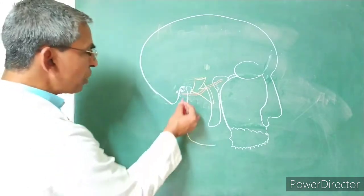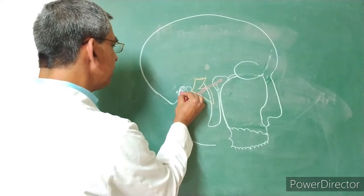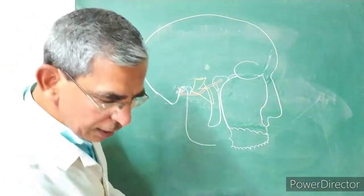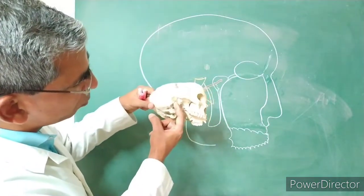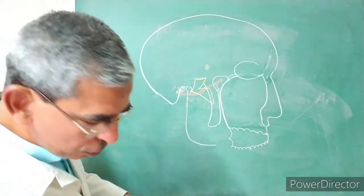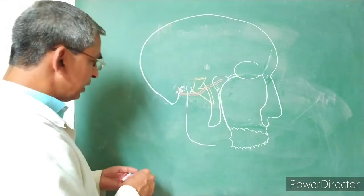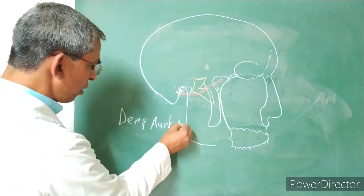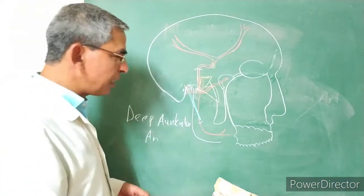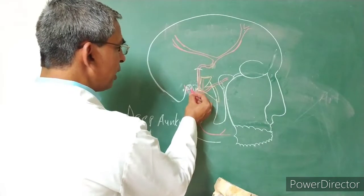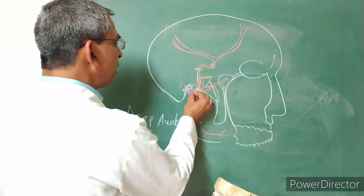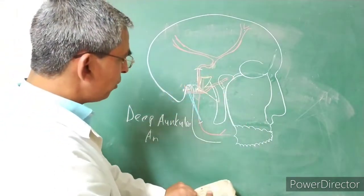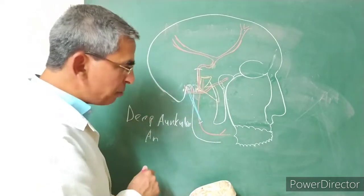The first branch of the first part is the deep auricular artery, which passes through the bony and cartilaginous part of the external acoustic meatus and supplies the skin of the external acoustic meatus and the tympanic membrane. The second branch is the anterior tympanic artery, which passes through the petrotympanic fissure, enters the middle ear cavity, and supplies the mucous membrane of the medial side of the tympanic membrane.